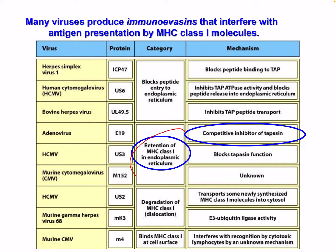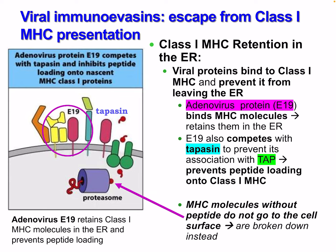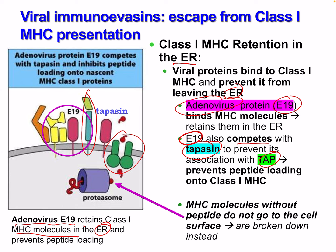Another evasion strategy is retention of MHC class 1 in the ER — essentially preventing MHC from being expressed on the cell surface. MHC class 1 retention: viral proteins bind to class 1 MHC and prevent it from leaving the ER. Adenovirus binds MHC molecules and retains them in the ER. Adenovirus E19 competes with tapasin, preventing its association with TAP and blocking peptide loading onto the MHC. Without peptides, MHC molecules do not go to the cell surface and are broken down instead — we cannot send the warning signal that the cell is under attack.